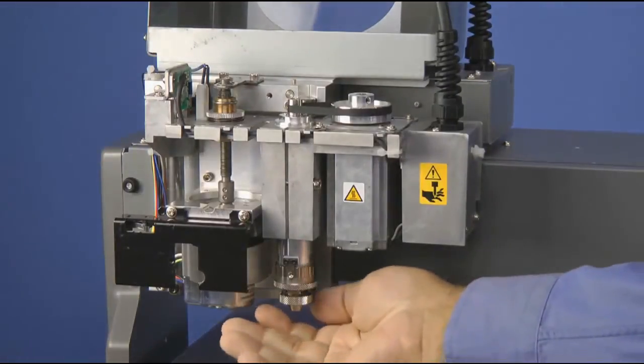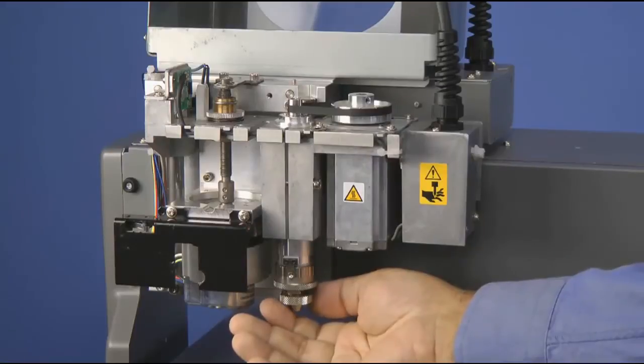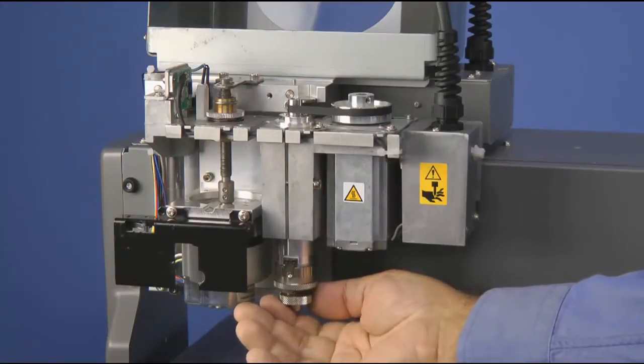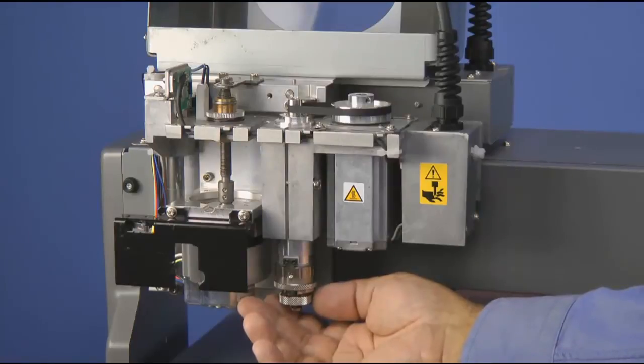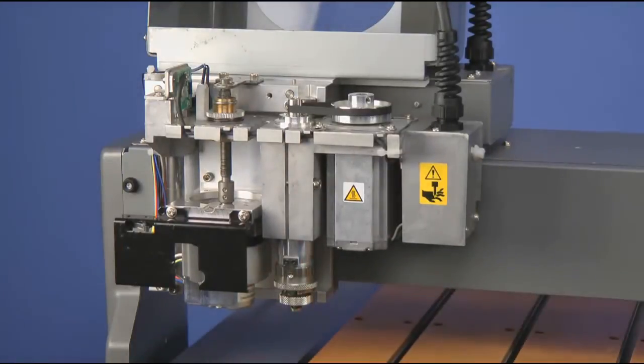Next, we will adjust the nose cone 7 to 8 more clicks counter clockwise. This allows us to set our depth to .041 to .042 inches. This is the depth that we want to drill our braille dots.